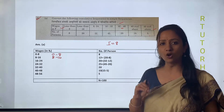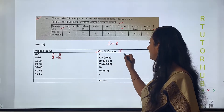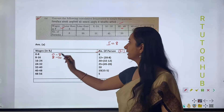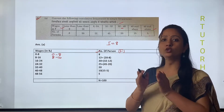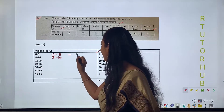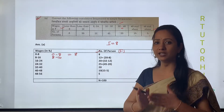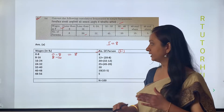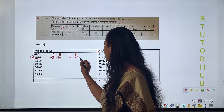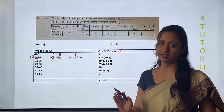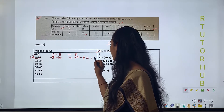Our first step is complete — we have formed the class groups. Next is number of persons, which means frequency. For less than 8, the frequency given is 8. That means for 0 to 8, our frequency will be 8. Next, less than 16 means all values below 16 have frequency 20. But we need to find the frequency between 8 and 16, so we subtract 0 to 8's frequency from 20. The answer is 12.